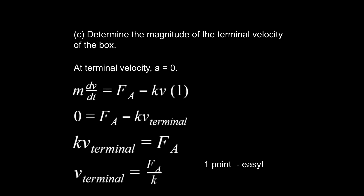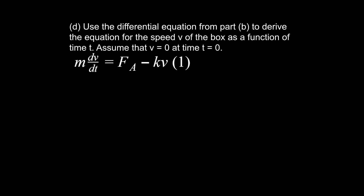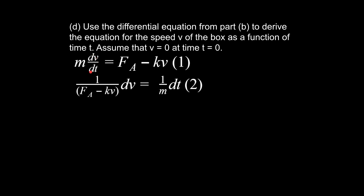Here is where the technical work comes in. Part D says to use the differential equation from part B to derive the equation for the speed of the box as a function of time, assuming v equals zero at time equals zero. We start with our equation and begin separating dv and dt — we can treat them just like variables, multiplying both sides by dt to get equation two.